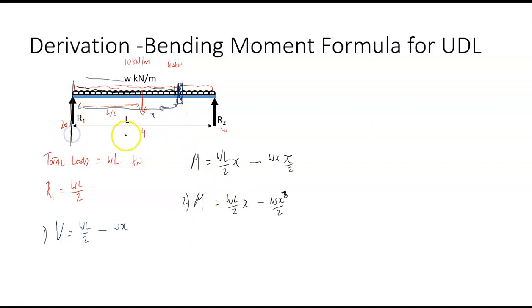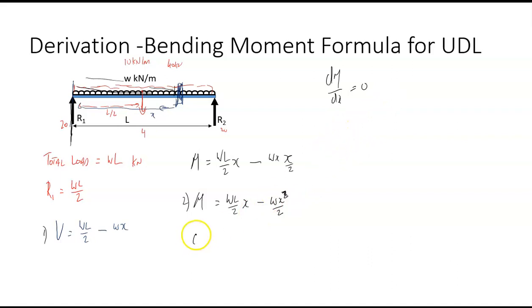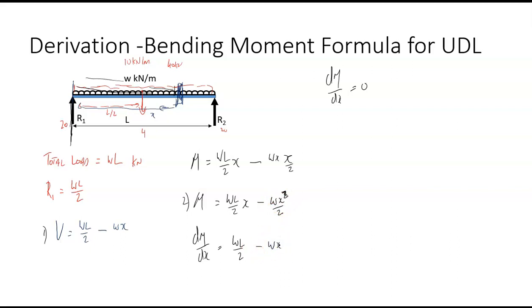To find the maximum bending moment, we differentiate and set it to zero. At a maximum, dM/dx equals zero. Differentiating the bending moment expression gives dM/dx = wL/2 minus wx, and setting that equal to zero gives the location of the maximum.